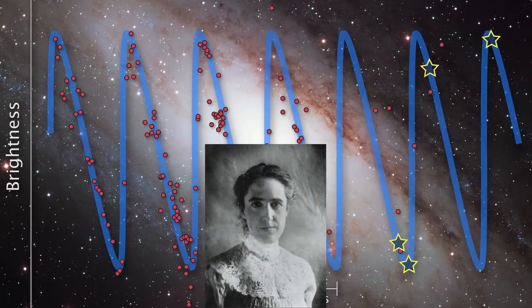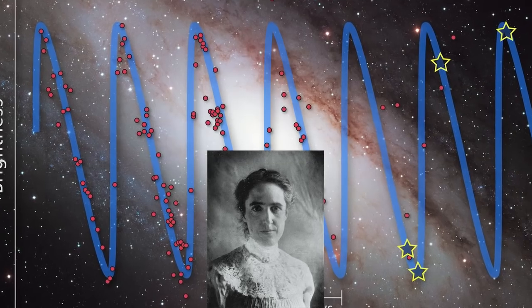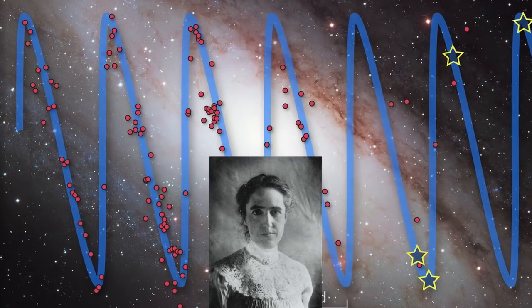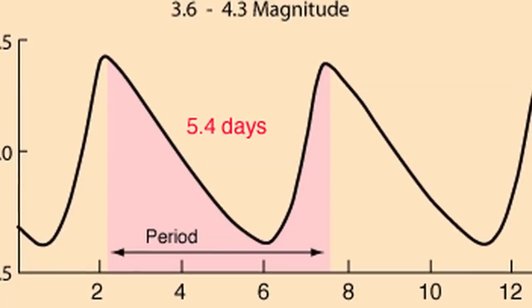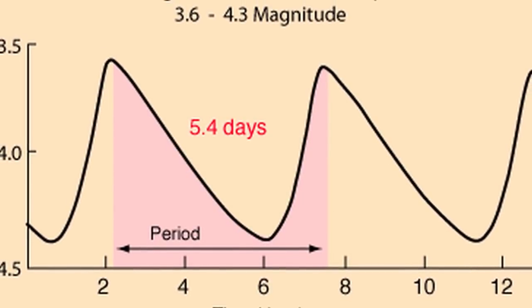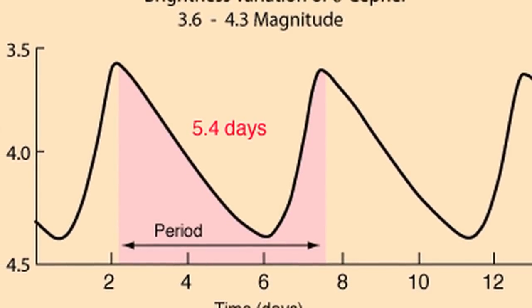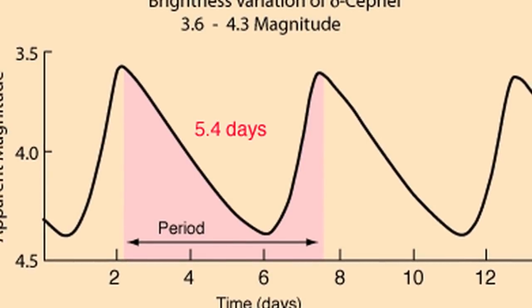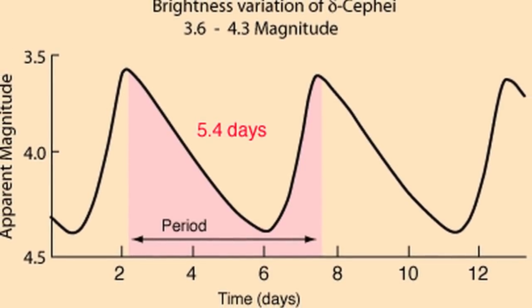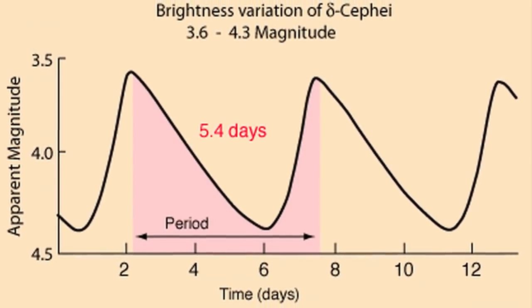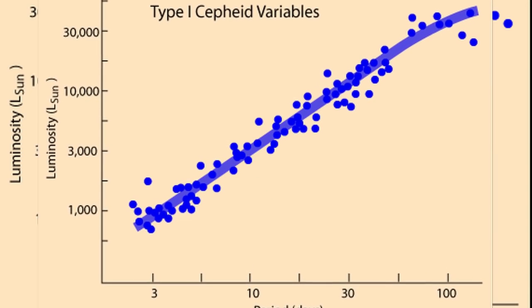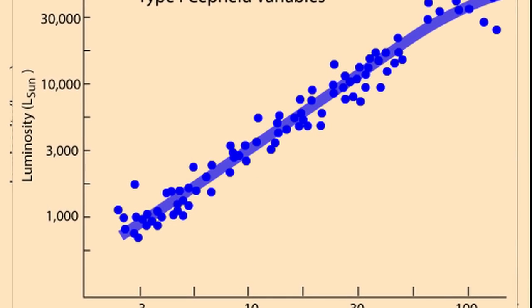In 1908, Henrietta Swan Leavitt noticed a specific relationship between the luminosity and regular pulse rate in a type of star known as a Cepheid variable. Seeing this relationship gave us what is known as a standard candle, and can also be used to determine the distance of a Cepheid variable by measuring its pulse rate versus its apparent brightness in the sky. This gave astronomers a tool to measure distances far greater than allowed through triangulation.